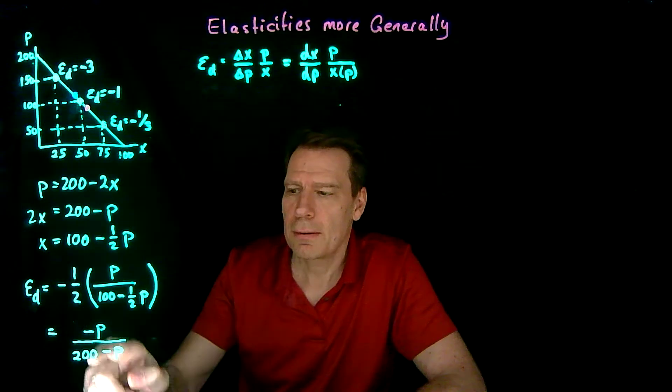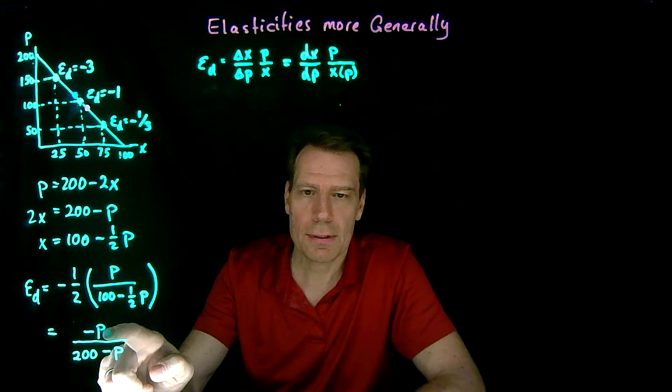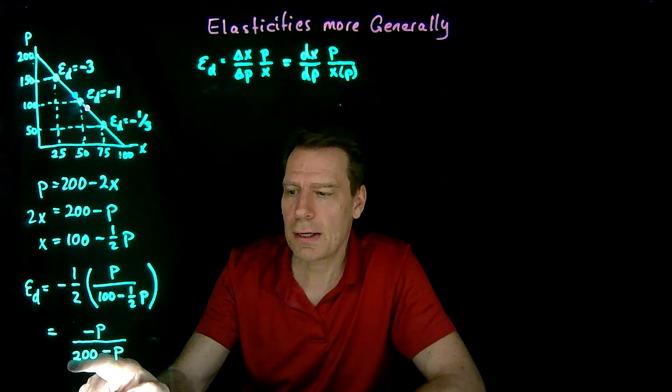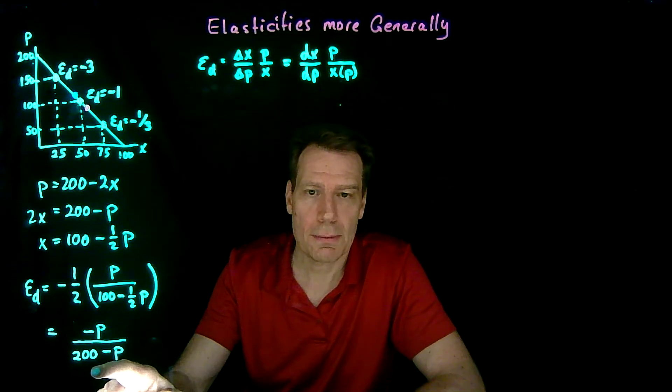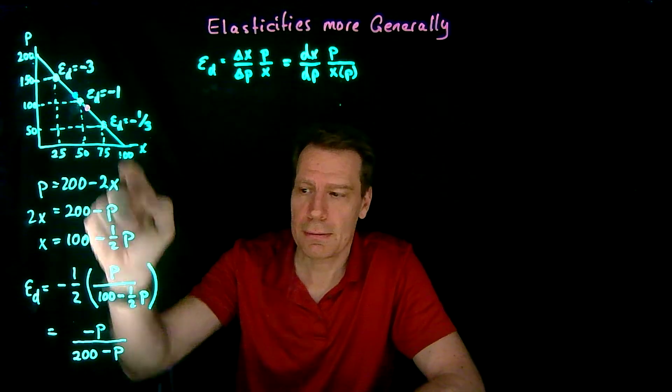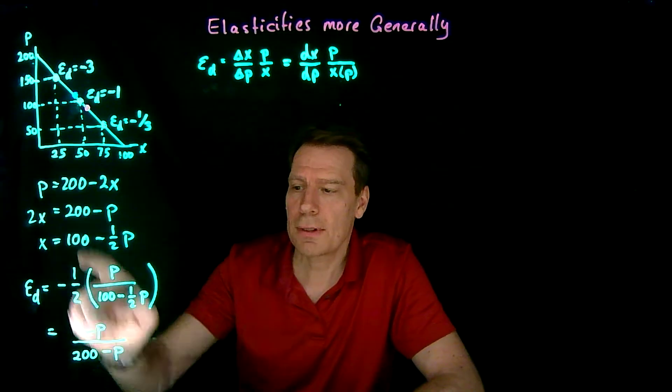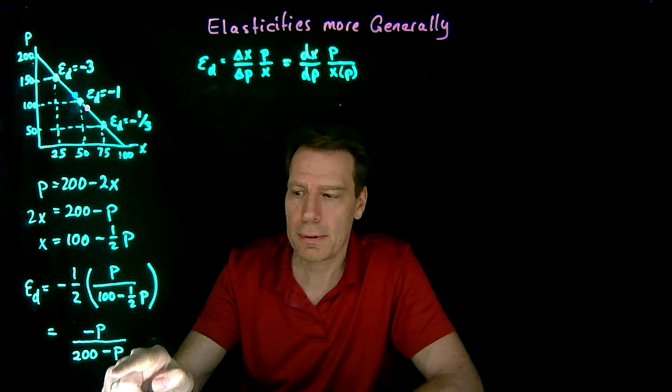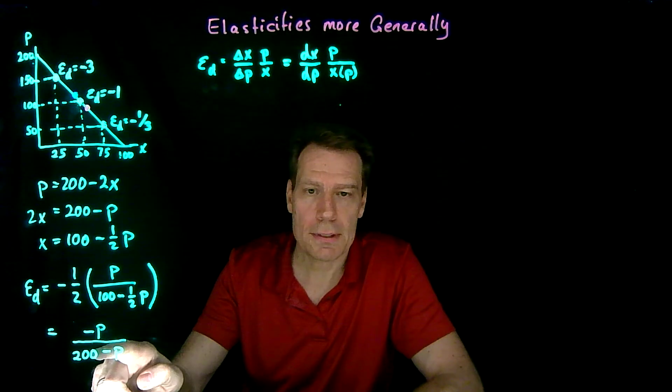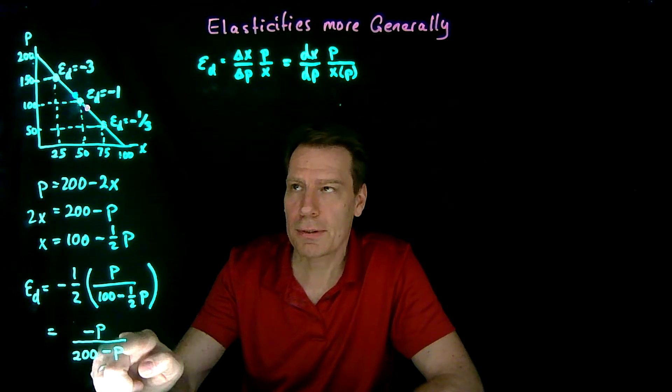Plug in 150. We have a minus 150 on the top, and we have a 200 minus 150, or 50 on the bottom. That gives us a minus 3. Minus 150 divided by 50. Plug in 100, we get minus 100 on the top. 200 minus 100 gives us 100. So that gives us a minus 1.